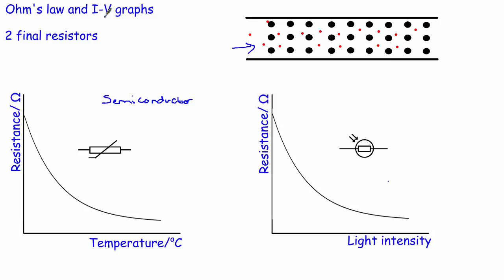So that's Ohm's law and IV graphs. We looked at a resistor, which is an ohmic conductor, and a light bulb and a diode, which are non-ohmic conductors. We had a definition for Ohm's law which you need to learn, as well as the definitions of ohmic and non-ohmic conductors. Finally, a quick recap of how resistance varies with temperature for a thermistor and with light intensity for an LDR. That's it for Ohm's law — I hope to see you again soon.